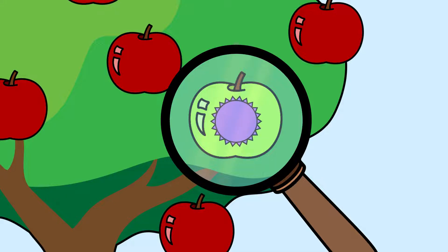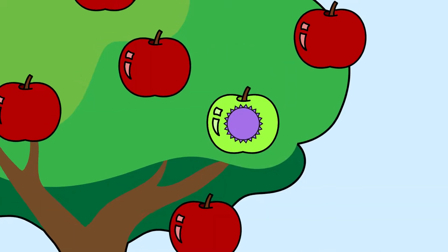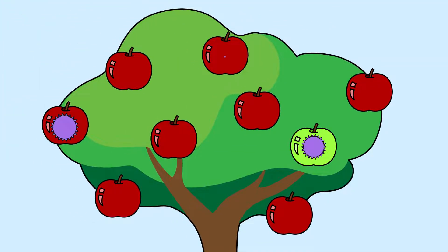If you discover something that caused the apple to change colour, you can look for the same thing in the other apples to find out if they might turn green too.